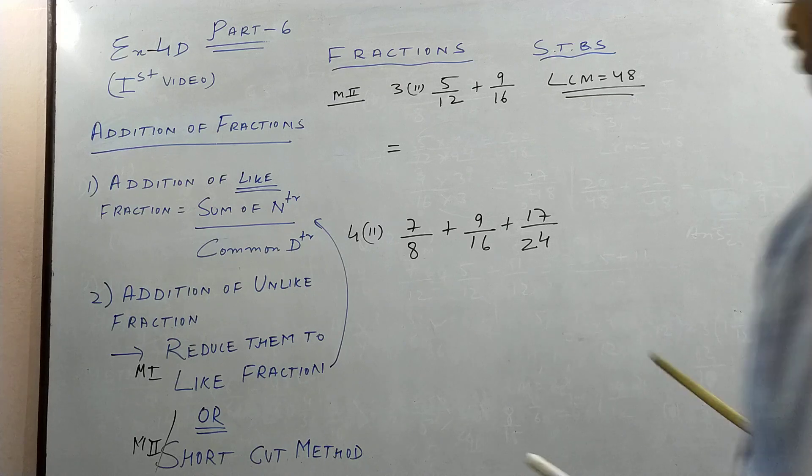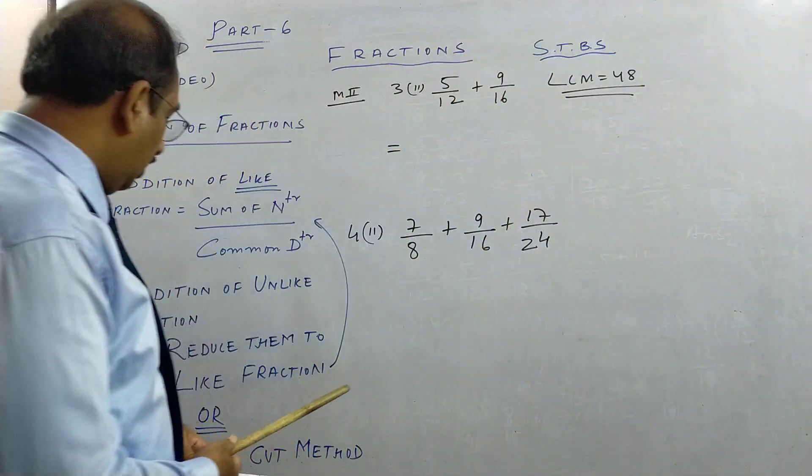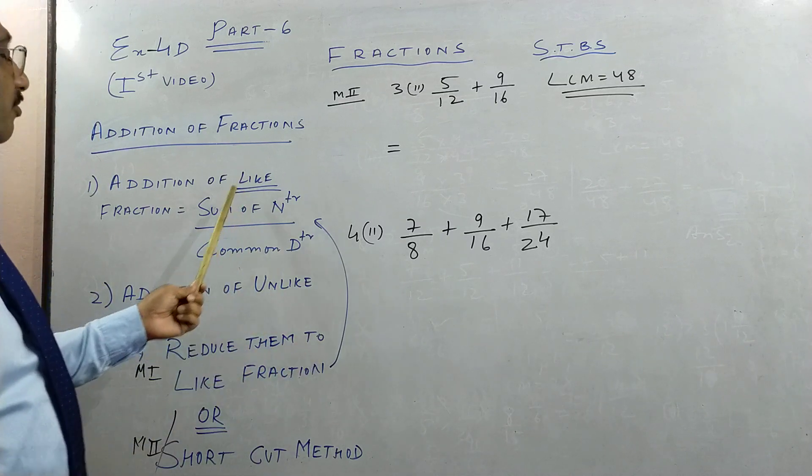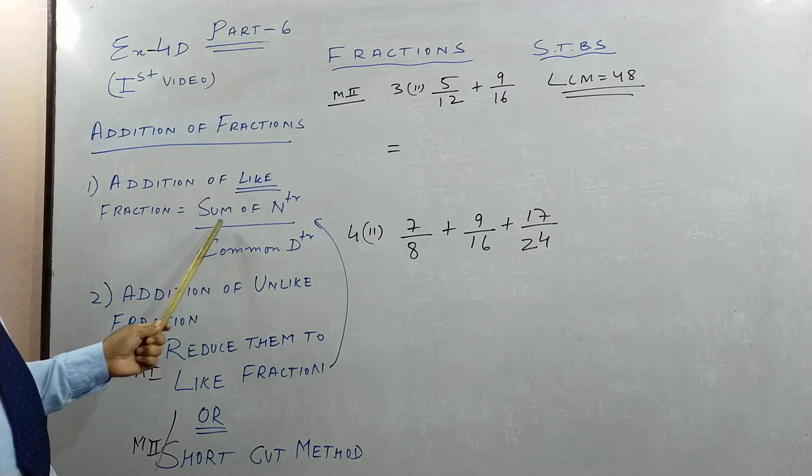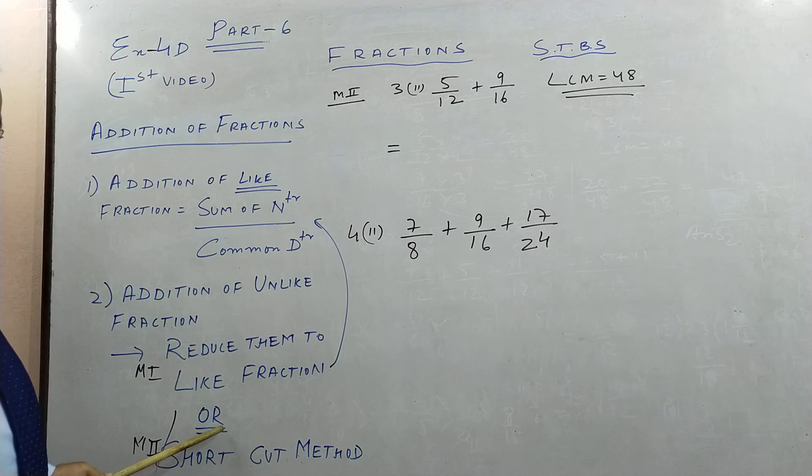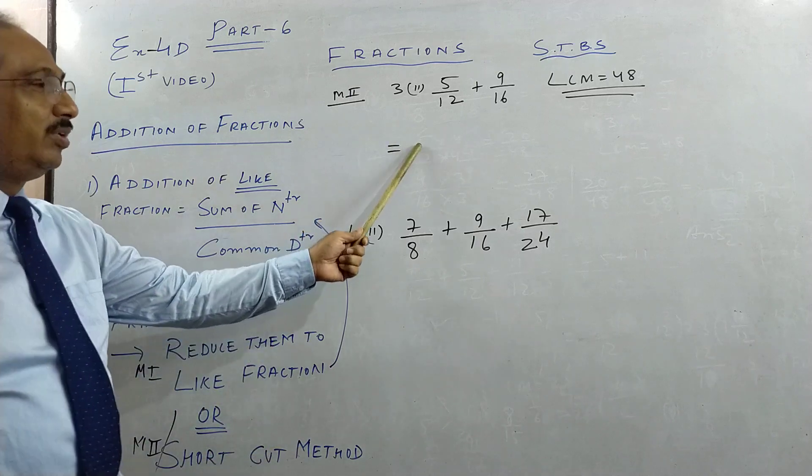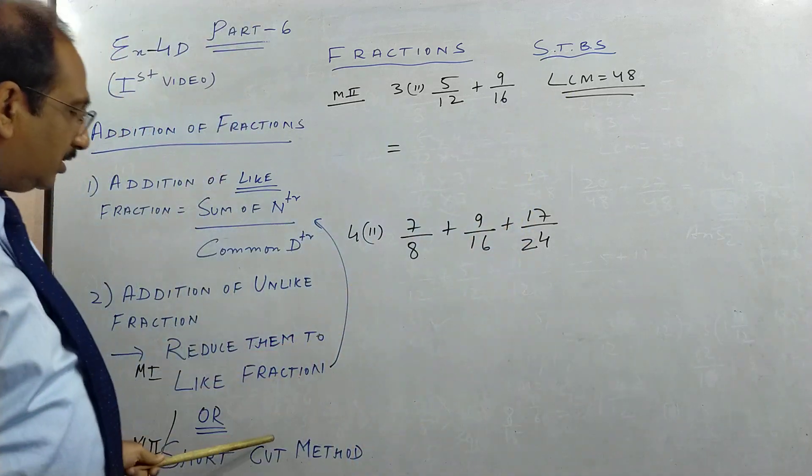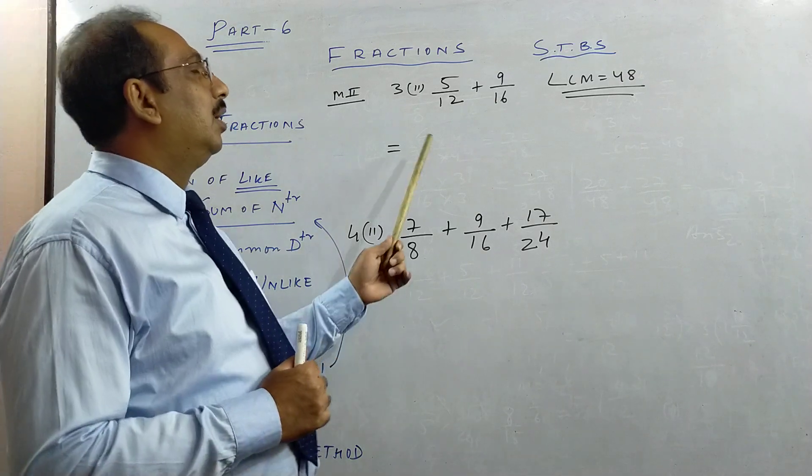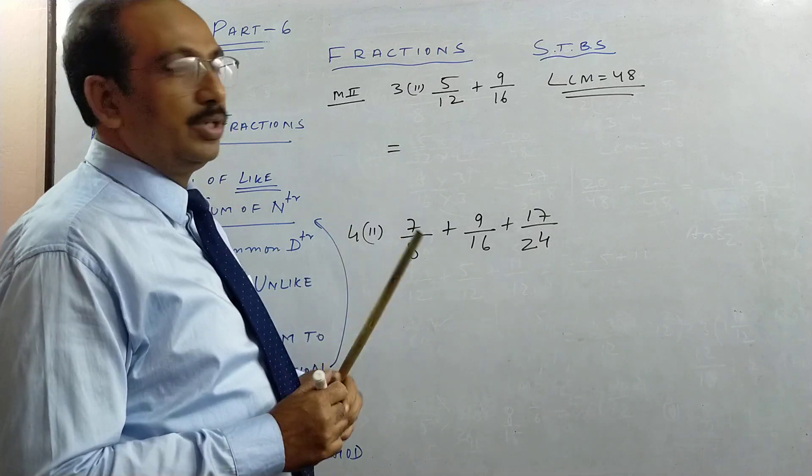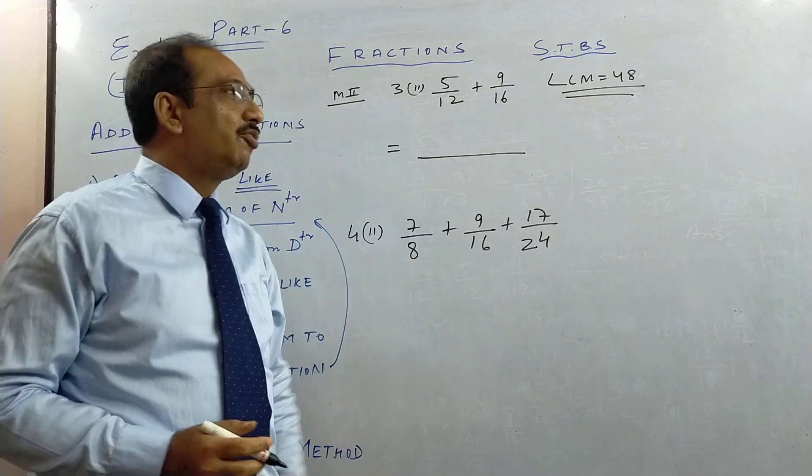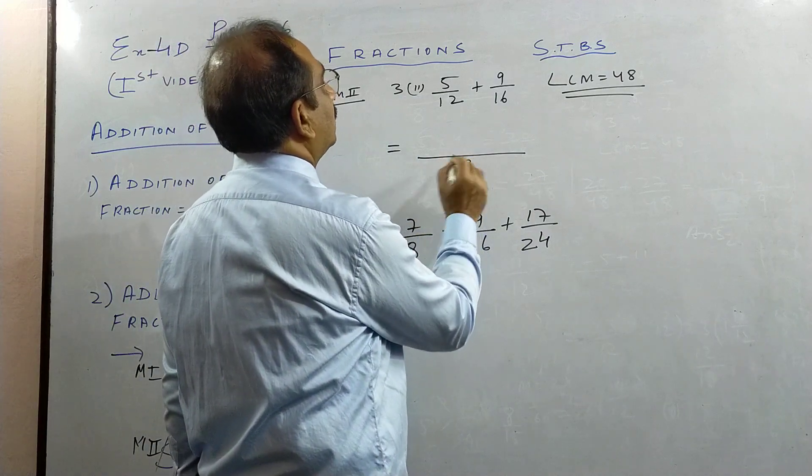I told you I will tell you method 2. In the first method, we converted them into like fractions and we went back to this. Once it becomes like fractions, we follow sum of numerator by common denominator. But in most of the books, including your book, there is something called shortcut method. Very similar. It's a little hard for you now, but this is better than the previous one because it saves your time and space. So here, how we do in method 2.